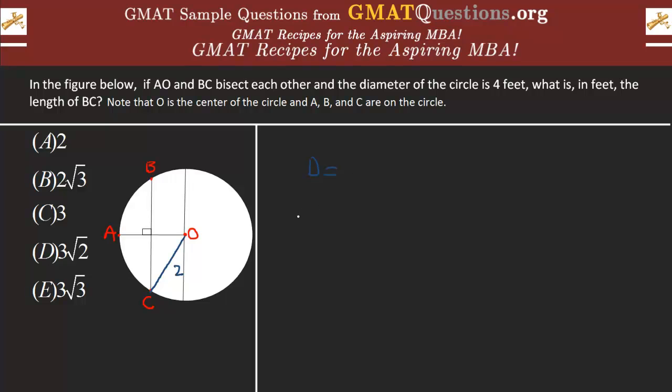Let me switch to the white color here. OC, you should agree, is 2 because the diameter of the circle is 4, so the radius is 2. The diameter of the circle is equal to 4, so the radius of the circle is equal to 2. Therefore, AO, which really goes from the center to the edge, is equal to OC, which is also equal to 2.